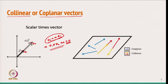Coplanar vectors are those lying in the same plane. If I take vectors like V1, V2, and V3 all lying on the same plane, they are called coplanar vectors. Collinear vectors have one vector in one direction and another in the same or opposite direction along the same line.